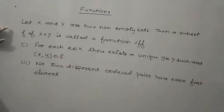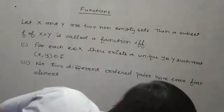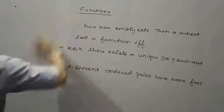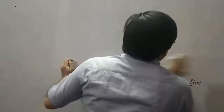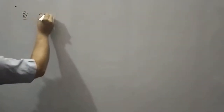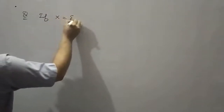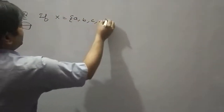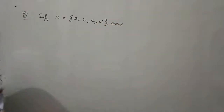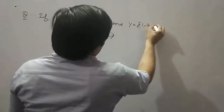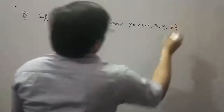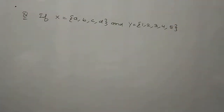Now we will understand this definition with the help of an example. Let capital X equal to {A, B, C, D} and capital Y equal to {1, 2, 3, 4, 5}. So these are two sets, X and Y.